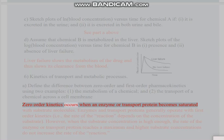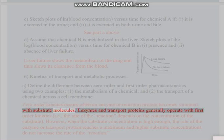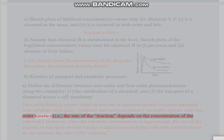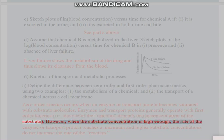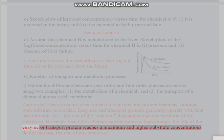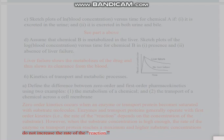Zero-order kinetics occurs when an enzyme or transport protein becomes saturated with substrate molecules. Enzymes and transport proteins generally operate with first-order kinetics (i.e., the rate of the reaction depends on the concentration of the substrate). However, when the substrate concentration is high enough, the rate of the enzyme or transport protein reaches a maximum and higher substrate concentrations do not increase the rate of the reaction.